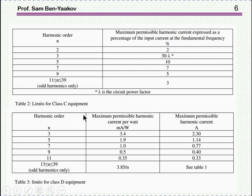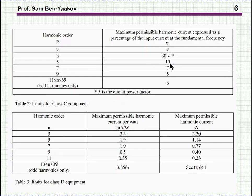This is now for class C. The limits are not defined as absolute currents, but really proportional to the first harmonic. For example, the fifth harmonic is 10% of the first harmonic — the major component of the current — so it's not dependent on the power level. For each power level, it will be 10%. The definition of the third harmonic is odd: it's 30 lambda, where lambda is the circuit power factor. So if the power factor is approaching 1, it will be 30%; if the power factor is 0.5, it will be only 15%.